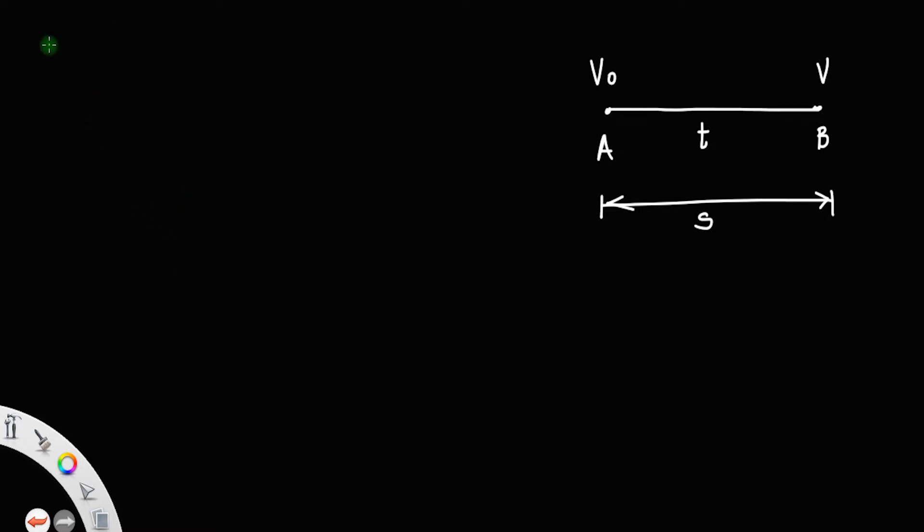Then we have distance s equal to average velocity into time. Average velocity will always be the arithmetic mean of the initial and final velocity, that is v plus v0 divided by 2, then you put this time t.